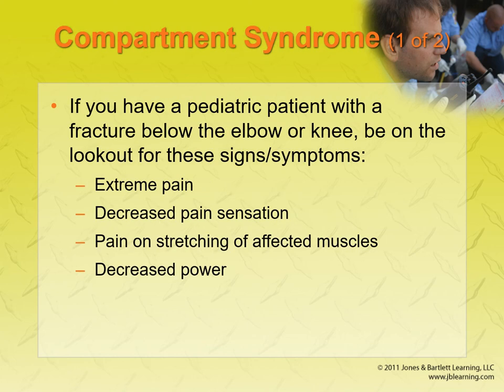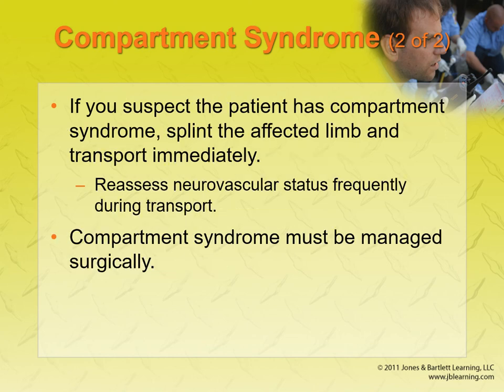Compartment syndrome — this is a refresher because it's something we're worried about and it can happen with lots of different injuries. Compartment syndrome must be managed surgically. They do a fasciotomy — they take a scalpel and cut open all the muscle compartments so it can swell, then they manage that swelling and it goes down and a person can recover. Without that surgery, there's a good chance a person could actually lose their limb.